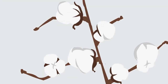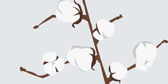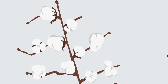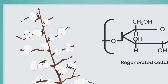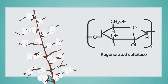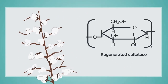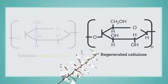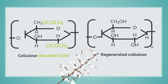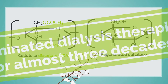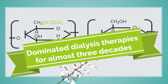Historically, the first membranes were made of polysaccharide from pressed cotton — substituted or unsubstituted cellulose, with cuprofane as the primary product. Cellulose membranes dominated dialysis therapies for almost three decades.